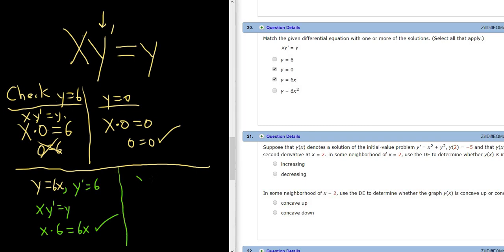And let's check y equals 6x squared. So y prime in this case would be 12x. Writing down our DE again, which was xy' equals y. Would this work? We would get x times 12x equals 6x squared. No that would not work.